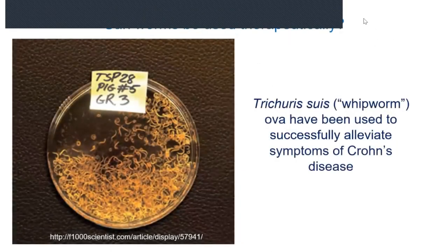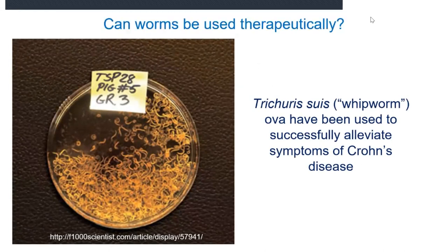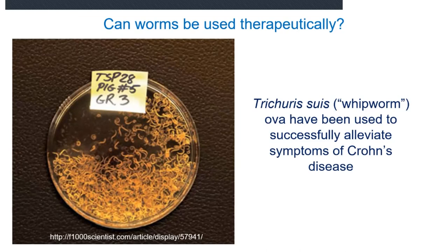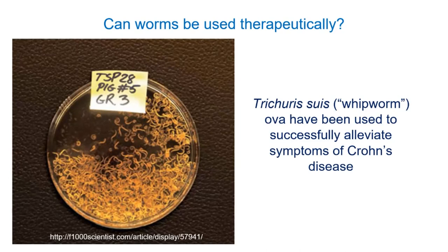A couple more things about nematodes — there are other ones like whipworms, found in millions of people worldwide. I just wanted to give you three examples. The pinworm is maybe the most relevant for people in Canada; the other two are more common in developing countries. Something interesting: the same part of your immune system that deals with allergies is the same part that deals with worms. So if you have allergies or autoimmune disease, it's the same immune pathway. People are trying to figure out if we can take advantage of this.